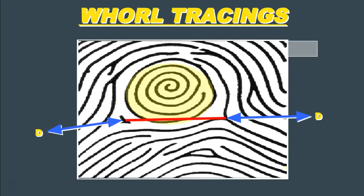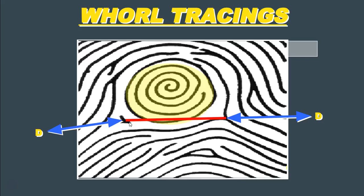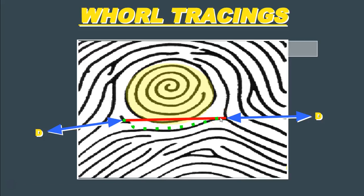Looking at this plain whorl example: we have a delta on the left and a delta on the right. Starting our tracing at the left delta and following the ridge, we find that the line actually meets the other delta directly. So we would call this a meeting tracing — our tracing flows from one delta and meets the other delta. This whorl is designated as a plain whorl with a meeting tracing, so we write P and M in the top right-hand corner.